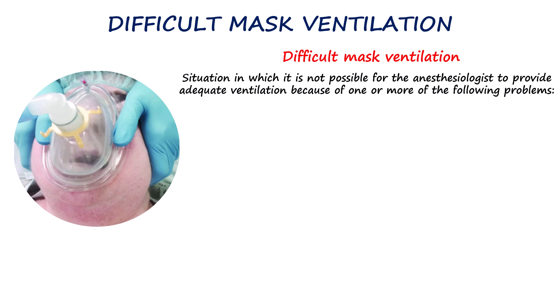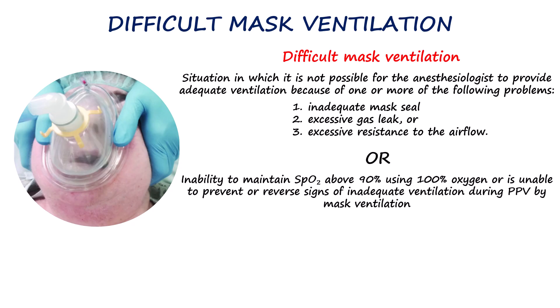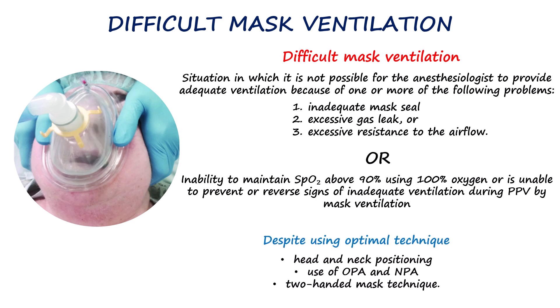difficult mask ventilation is defined as a situation in which it is not possible to provide adequate ventilation due to inadequate mask seal, excessive gas leak, or excessive resistance to airflow. A functional outcome-based definition states that difficult mask ventilation occurs when an unassisted anesthesiologist is unable to maintain oxygen saturation above 90% using 100% oxygen, or is unable to prevent or reverse signs of inadequate ventilation during positive pressure mask ventilation. Both definitions assume standard measures have been applied, including optimal head and neck positioning, use of oropharyngeal or nasopharyngeal airways, and the two-handed mask technique.